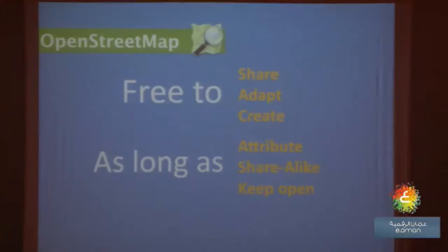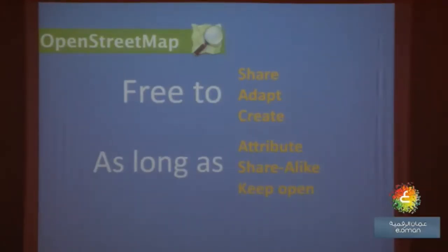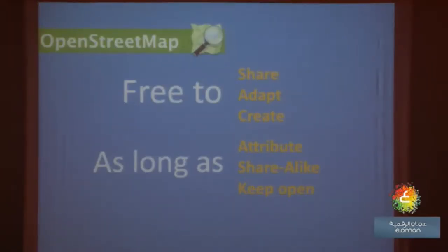It also needs to be shared alike, meaning the license must remain the same. If you create a database of school locations in Oman and add more schools that weren't in OpenStreetMap, you need to ensure your database carries the same license. You need to keep it open — the license is ODBL, Open Database License — and you cannot keep it to yourself. You need to ensure that other people are also able to access it.